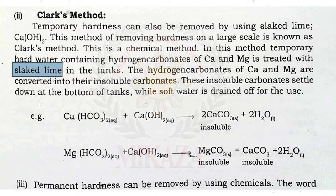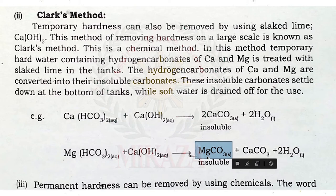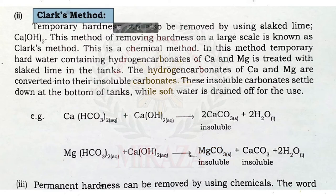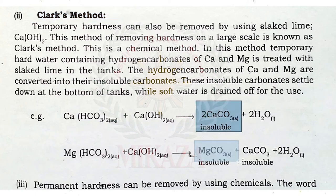In Clark's method, slaked lime reacts with the hard water, producing calcium carbonate and magnesium carbonate, which are insoluble and settle down. Boiling is expensive and suitable only for small amounts of water, whereas slaked lime can be used on a large scale for large amounts of water. The Clark method is used at large scale. Both methods share the same concept — producing calcium carbonate and magnesium carbonate which settle below — and then soft water is drained off.